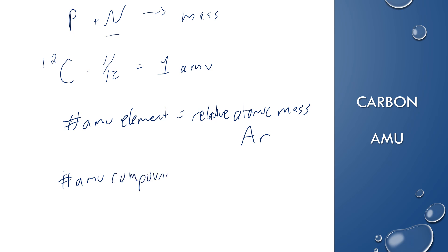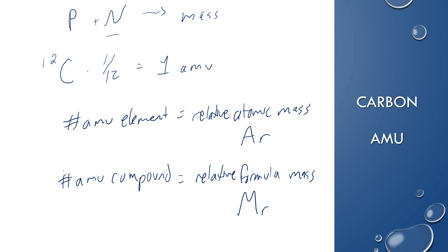When you add up all of the elements in a compound, we call that the relative formula mass, and we use the abbreviation M sub r. We'll practice calculating the formula mass.